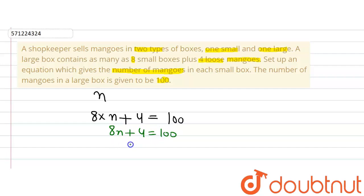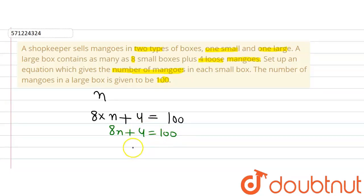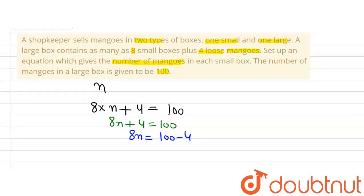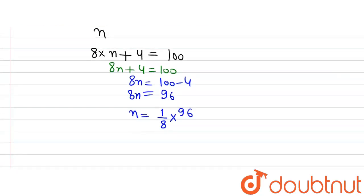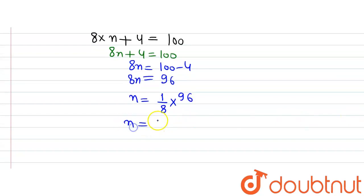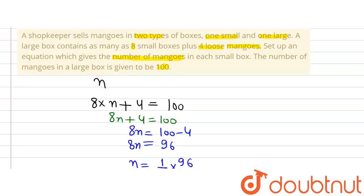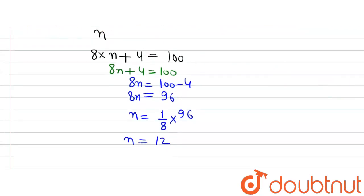To find the number of mangoes in each small box, we solve the equation. Moving 4 to the right-hand side gives 8n = 100 − 4 = 96. Dividing both sides by 8 gives n = 12. So the number of mangoes in the small box is 12.